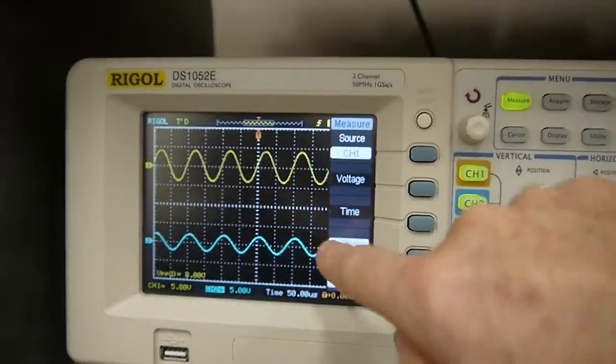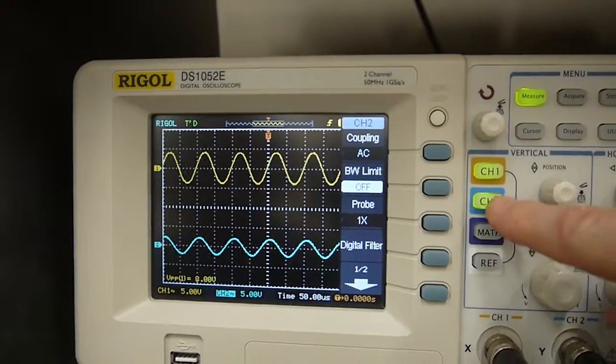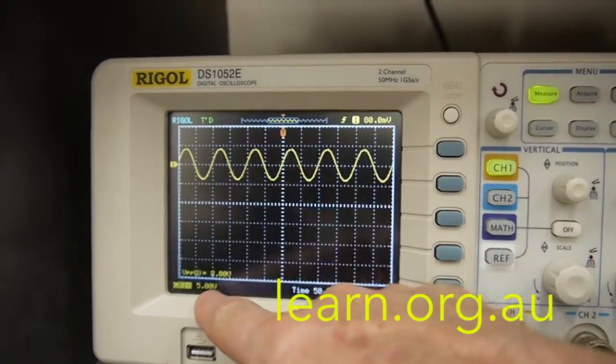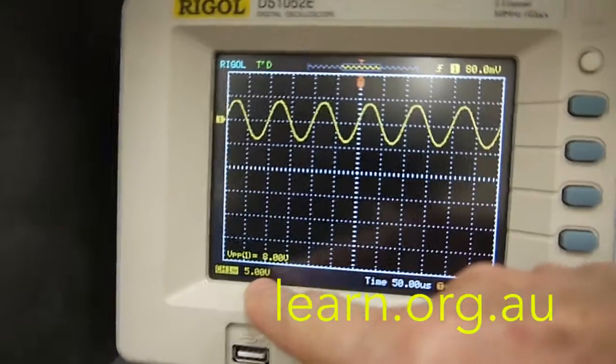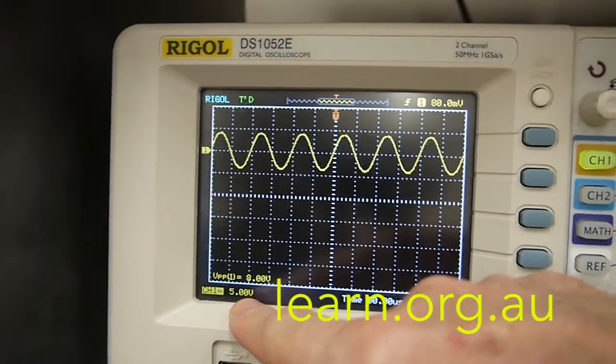We've still got the two waveforms being displayed. We can probably get rid of channel 2 for the time being. And channel 1 we've currently got it set for 5 volts per division. We're not going to see much on the screen so what can we do about that?